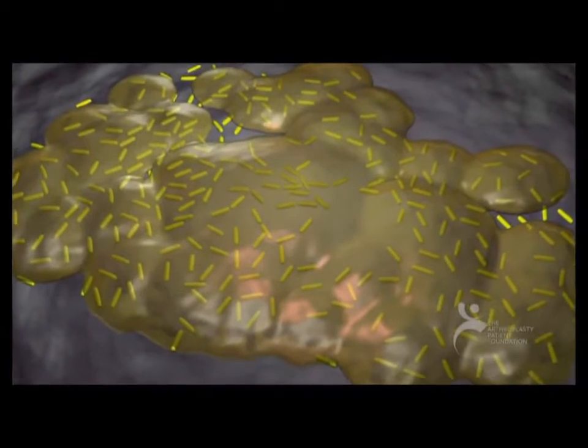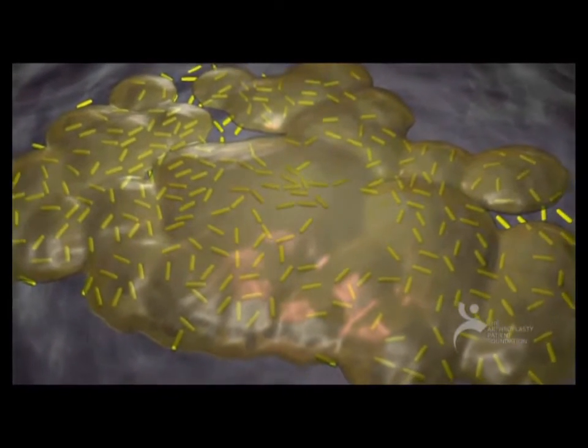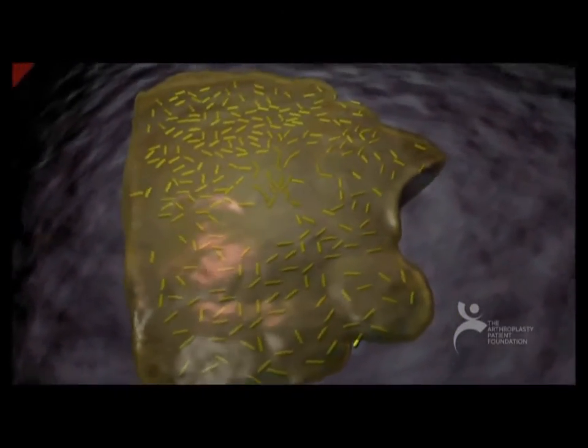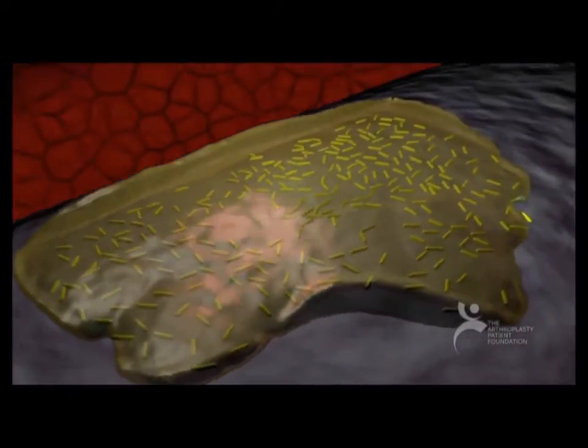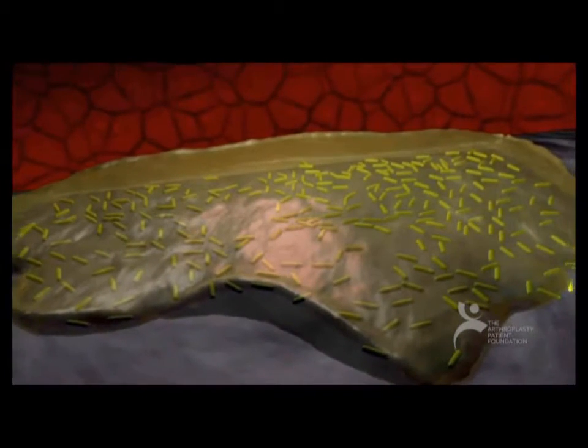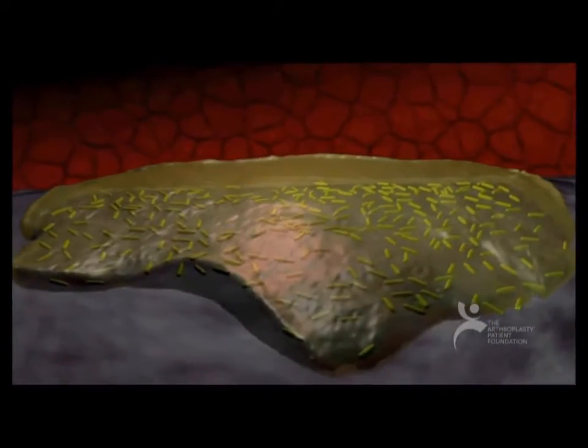Cells now communicate via quorum sensing and use small molecules to regulate gene expression within the bacterium. The community grows through both cell division and recruitment. The development of this complex biofilm makes the community resistant to the immune response and antibiotics.